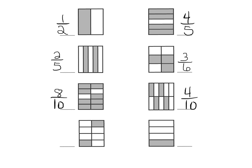And then down here, we can see one, two, three, four — so that's eight, because you've got two columns of four — and two out of eight are shaded in: two-eighths. And lastly, we can see one-fourth.